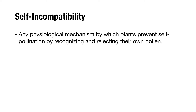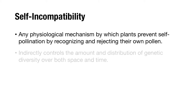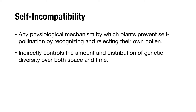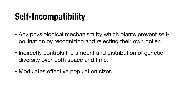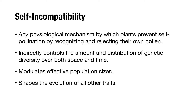Generally, the term self-incompatibility is used to describe any physiological mechanism by which plants prevent self-pollination by recognizing and rejecting their own pollen. Because of its key role in mating behavior, SI indirectly controls the amount and distribution of genetic diversity over both space and time. In this way, it modulates effective population sizes and it can profoundly shape the evolution of all other traits.